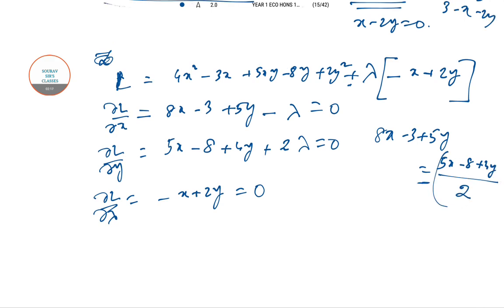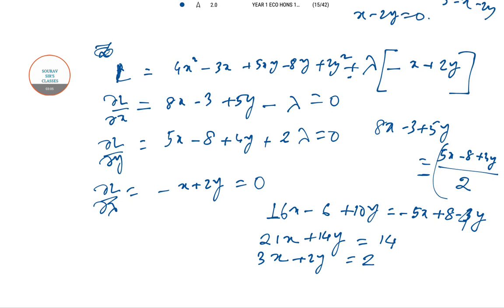So 8x minus 3 plus 5y equal to 5x minus 8 plus 4y over 2, whole minus this. So this will give you one equation. So minus, I'm just putting like 16x minus 6 plus 10y equal to minus 5x plus 8 minus 4y.